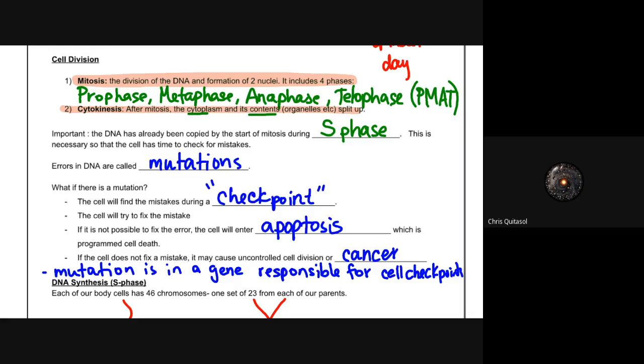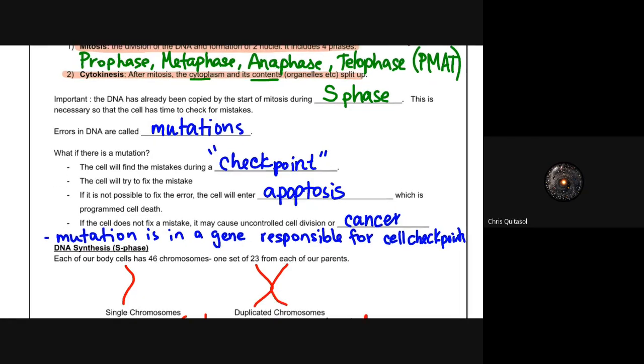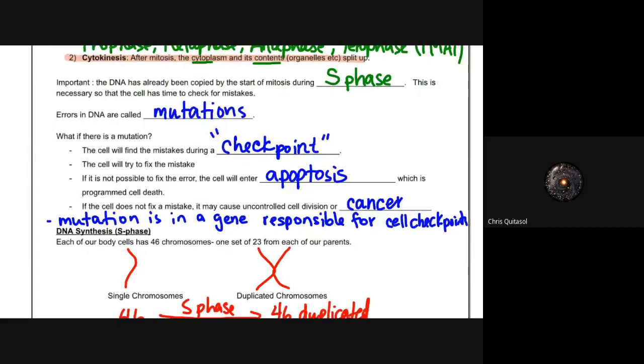When the cell cannot fix that mistake, this is what we call cancer. It's that uncontrolled cell division. It's the idea that the mutated DNA has created this error and this error is now propagated within future daughter cells, and it's not good, for lack of a better word.